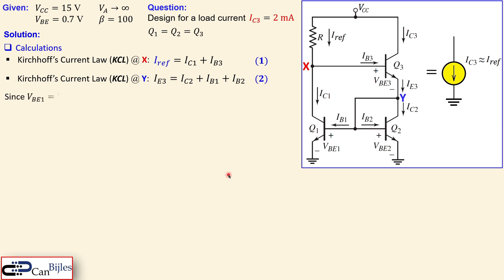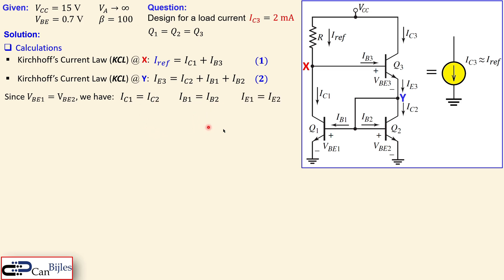Since VBE1 and VBE2 are exactly the same, the collector current IC1 equals IC2. The base currents IB1 and IB2 are also equal, since they are related to the collector currents by beta in a linear fashion. Consequently, the emitter currents are also the same for both transistors. This is an important result we'll use later.